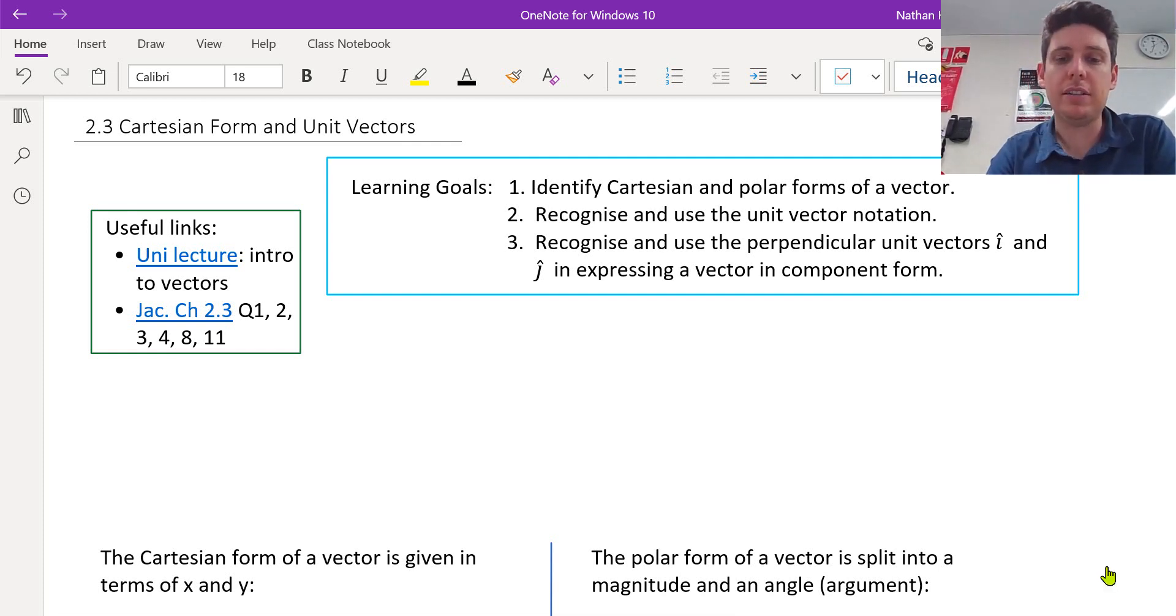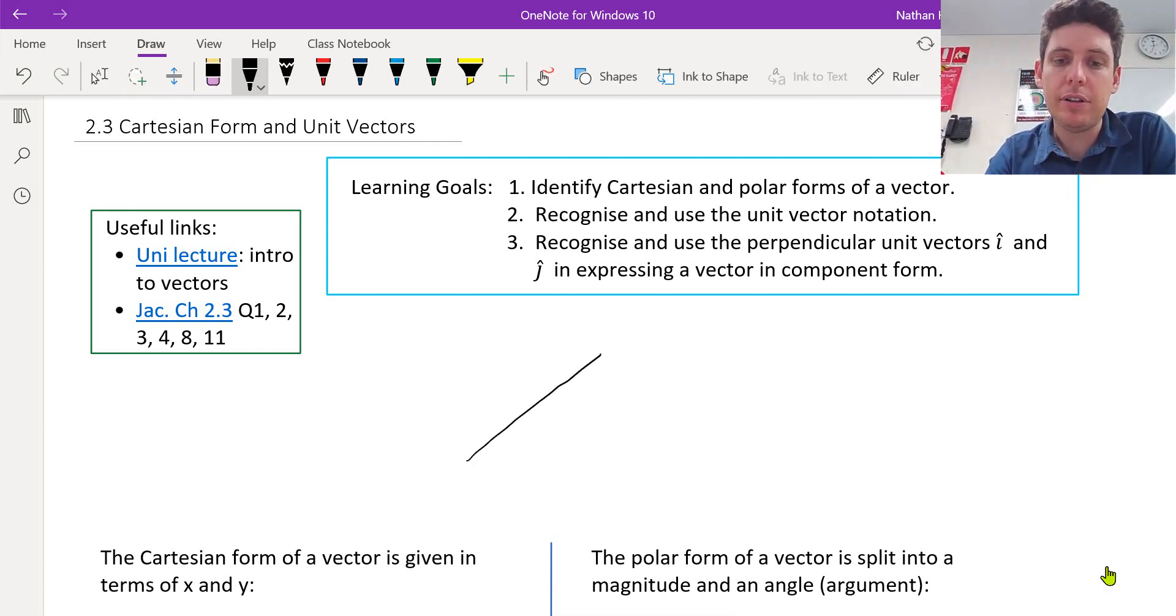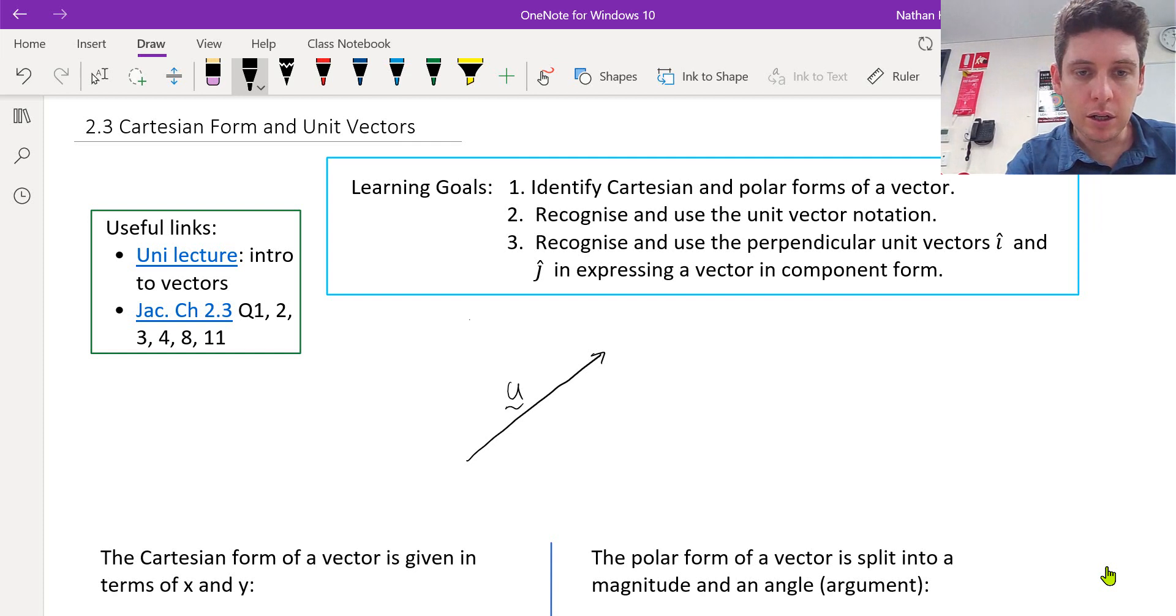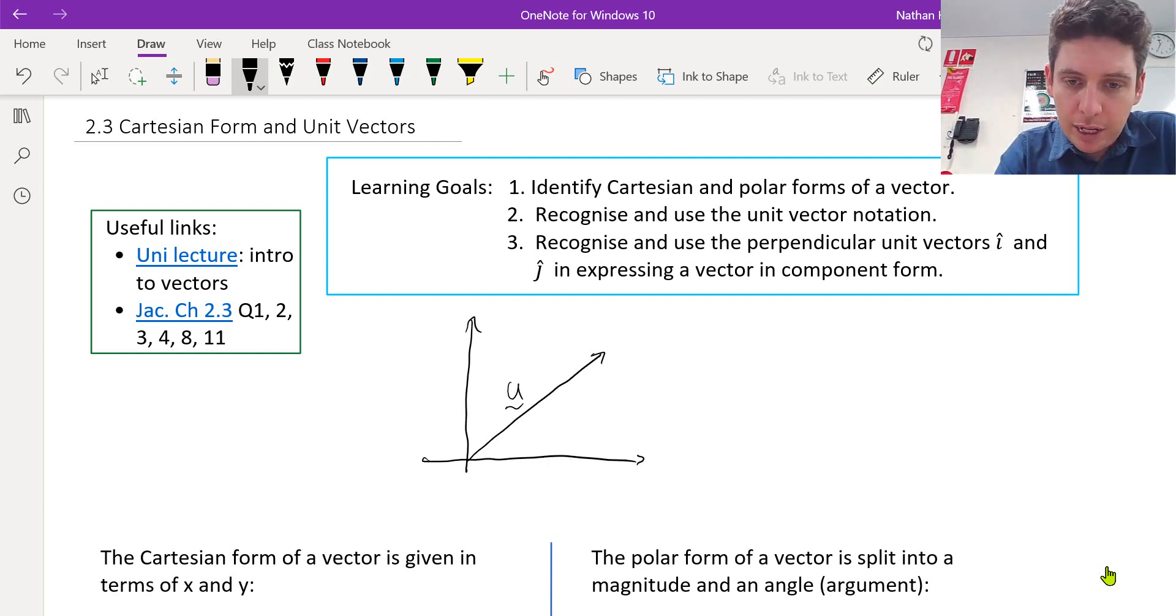We can express a vector with an arrow and we could call this vector u. We can put this vector on a Cartesian graph. So it has an x-direction amount, it goes a certain amount in the x-direction. Let's call this amount a.